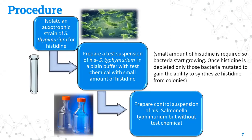For the procedure: we isolate the auxotrophic strain of S. typhimurium for histidine. Auxotrophy basically means the inability of an organism to synthesize a particular organic compound required for its growth. We then make a test suspension of histidine-negative S. typhimurium in plain buffer, add the test chemical, and also add a small amount of histidine. The small amount of histidine allows bacteria to at least start growing; once the added histidine depletes, only those bacteria which have mutated to gain the ability to synthesize histidine will form colonies.